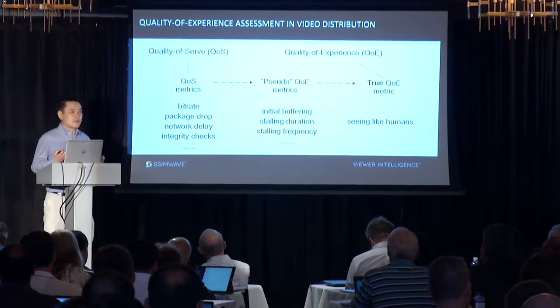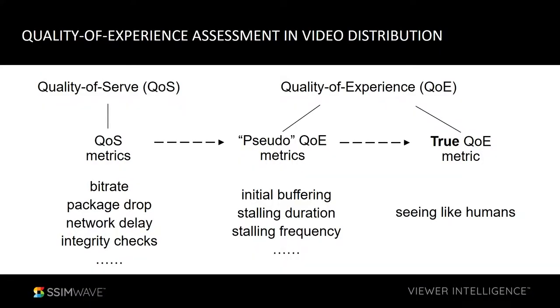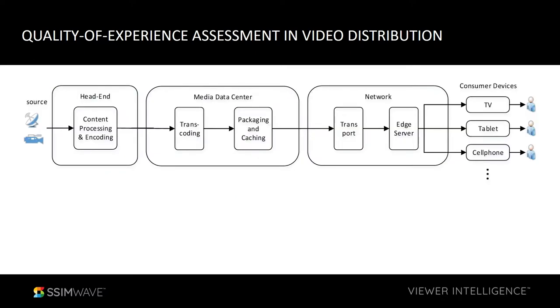That's why I call this kind of measure pseudo-QoE, because it's still not something where you let a human sit there and look at the video and tell you how good the video is. It's indirect parameters that partially reflect the final QoE. The true QoE is when humans sit there watching their video on their TV, on their smartphone, or on their tablet — what they would say about the quality of the video.